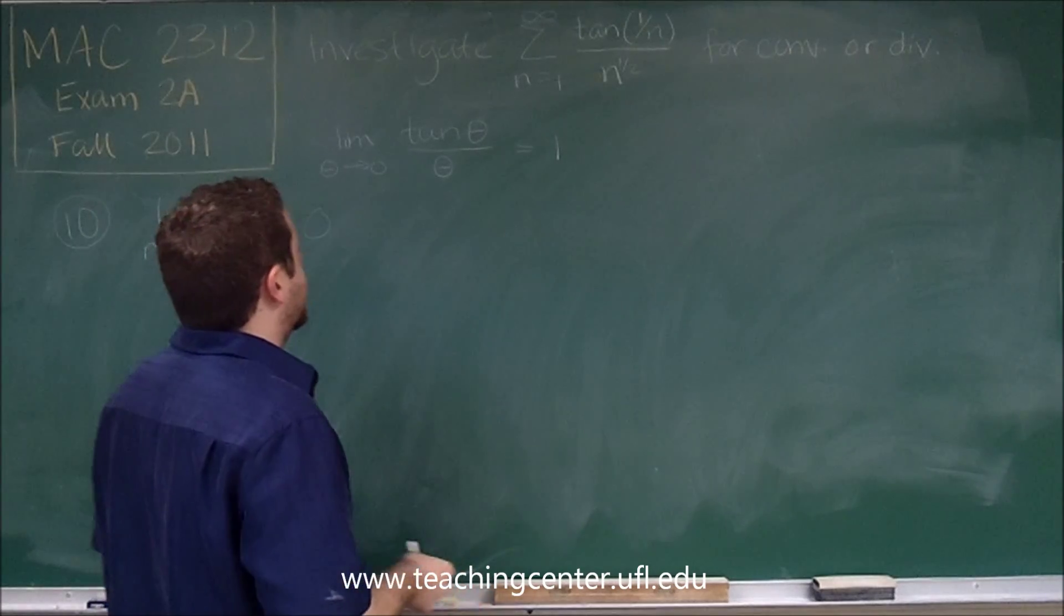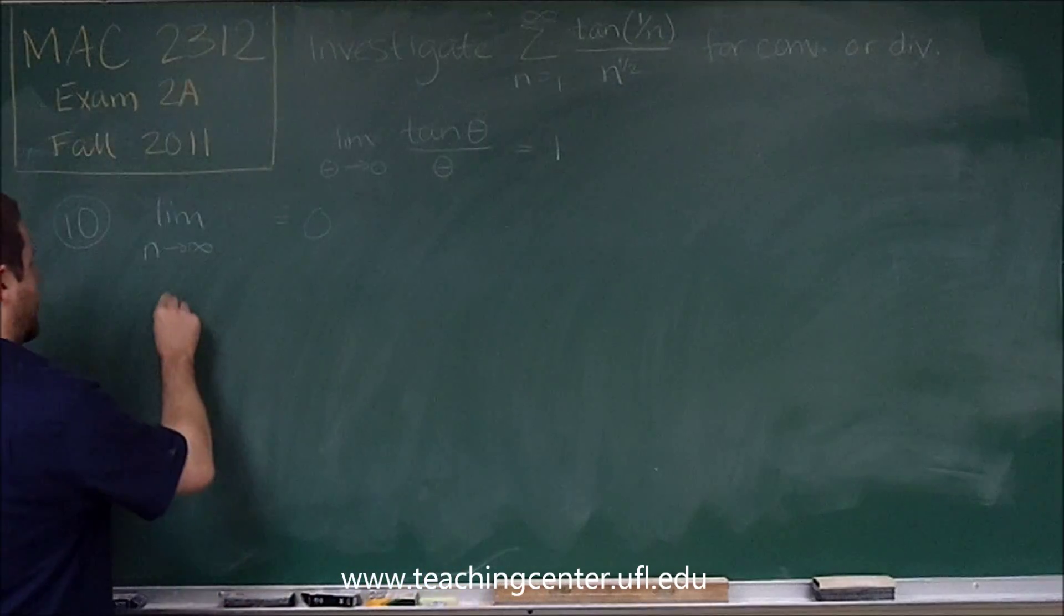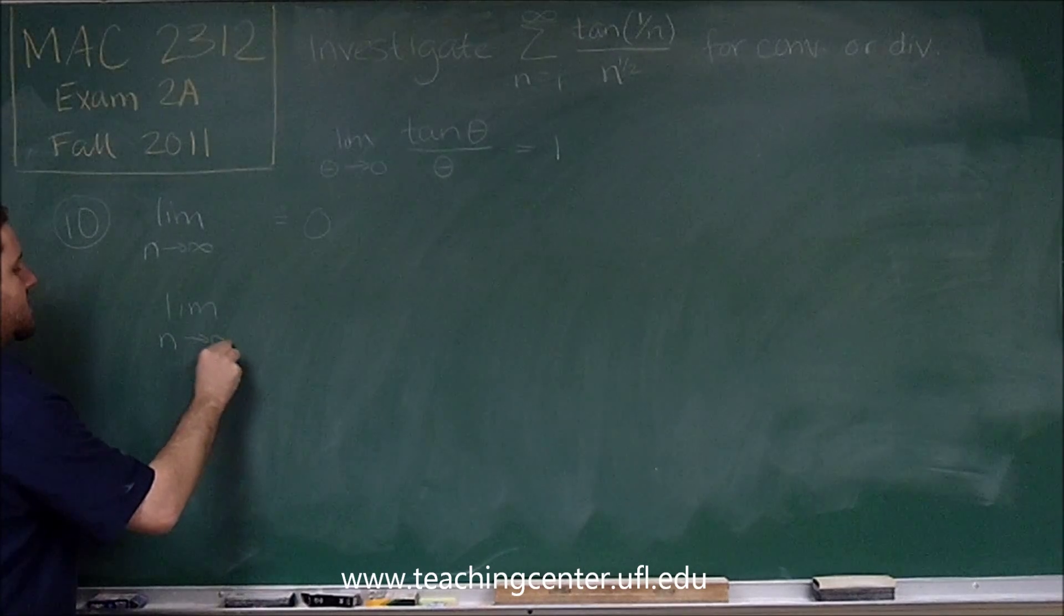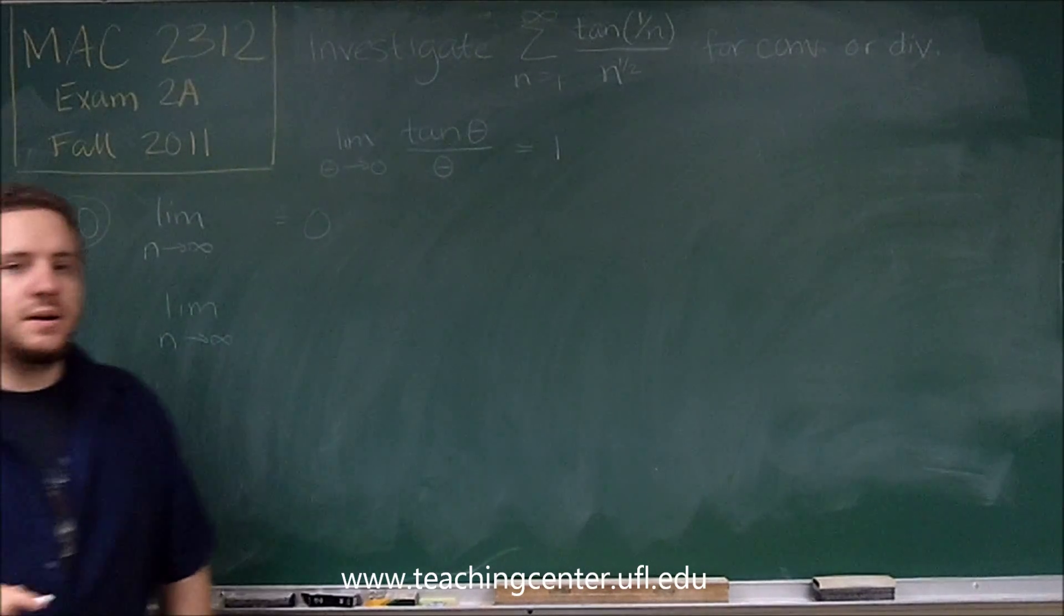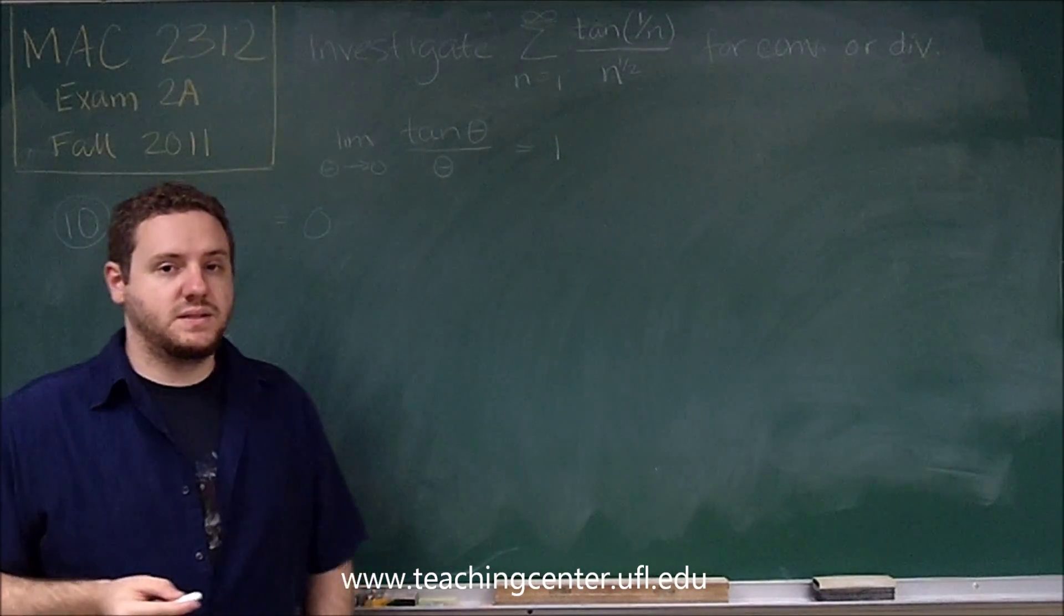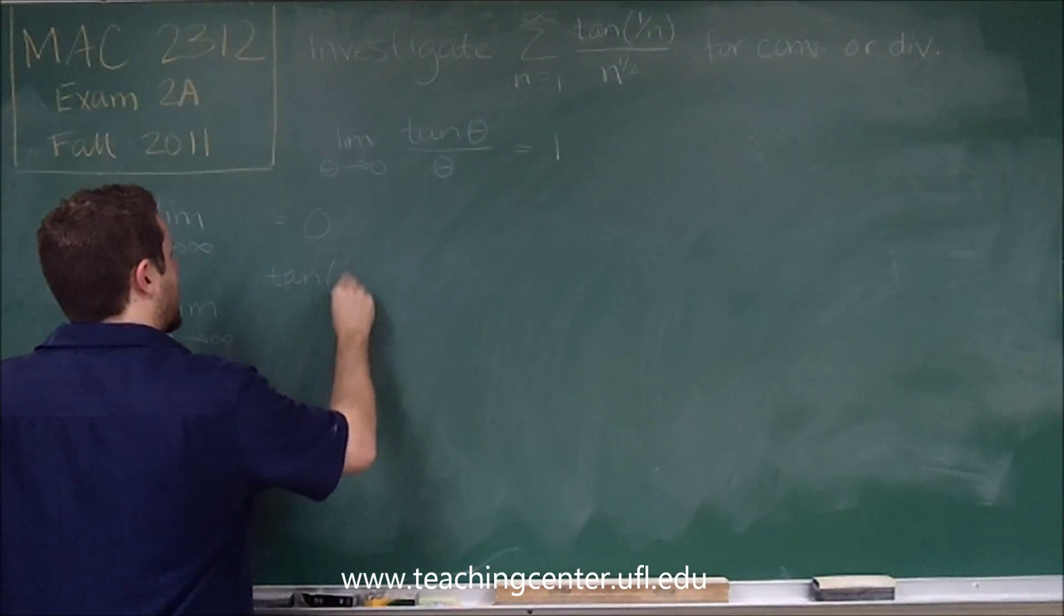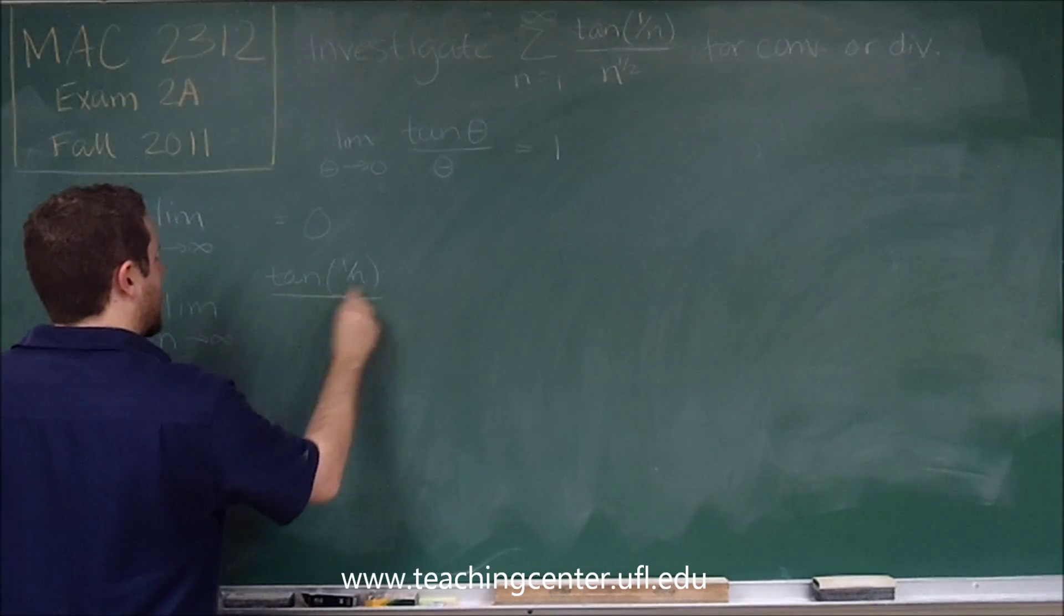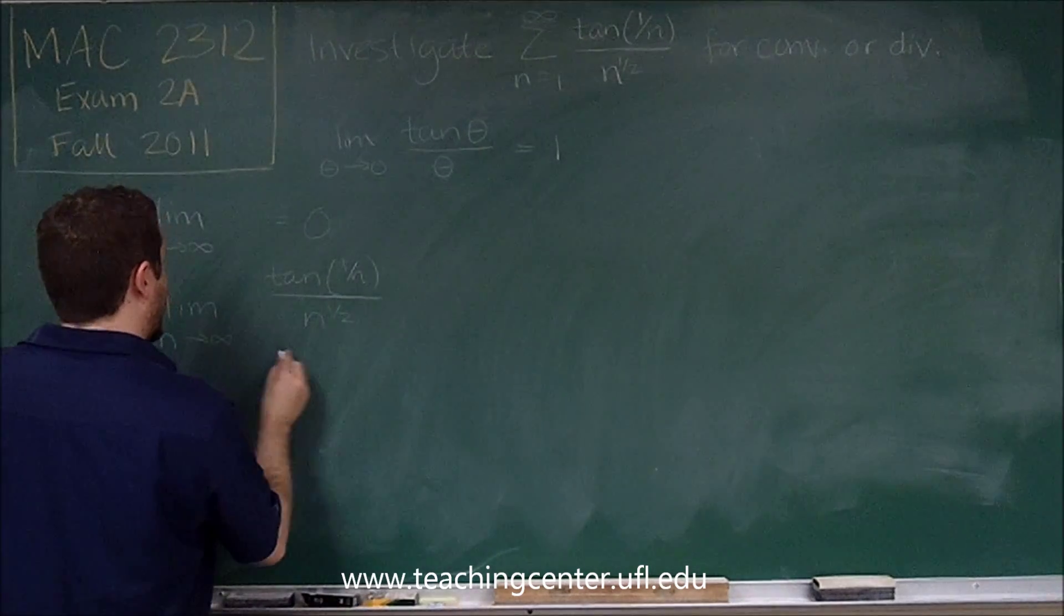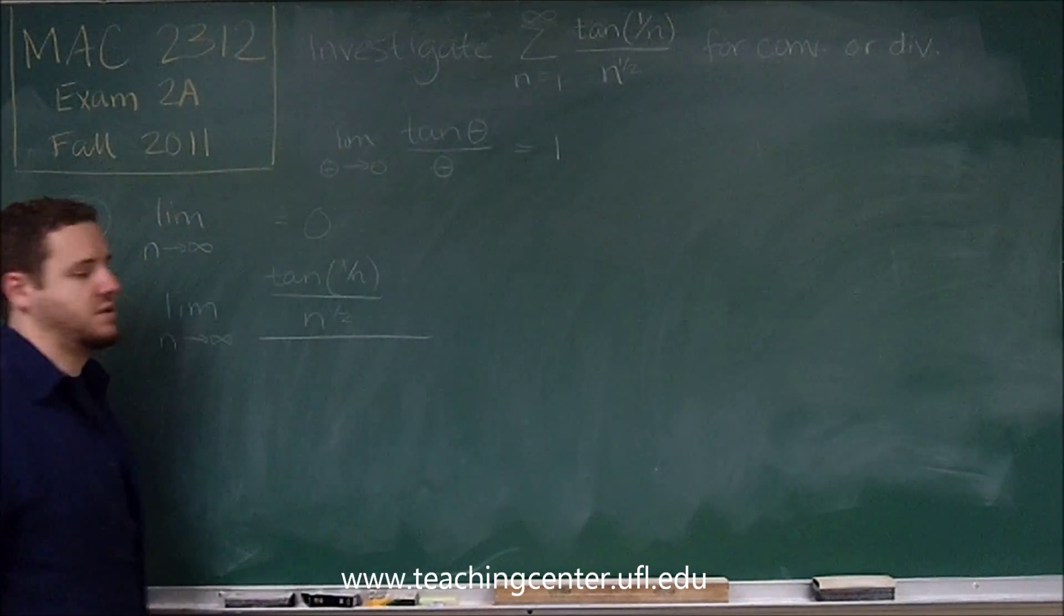Now, we're taking the limit as n goes to infinity when we use a comparison test. And when we're using limit comparison, we're going to take tan 1 over n over n to the 1 half. And we're going to divide that by some other function.